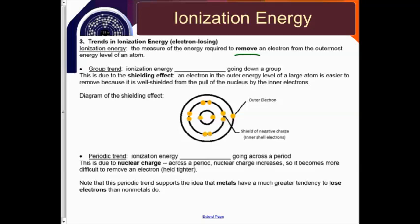Our group trend: ionization energy will decrease going down a group. This is due to the shielding effect, which means an electron in the outermost energy level of a large atom is much easier to remove because it is well shielded from the pull of the nucleus by the inner electrons. As you can see in this diagram, the outermost electron is shielded from the nucleus by this inner level of electrons.